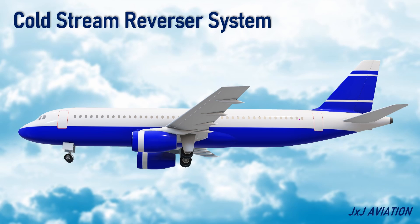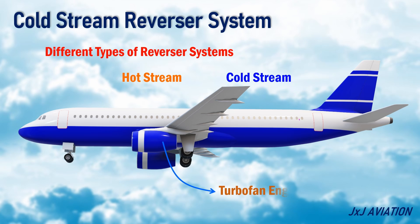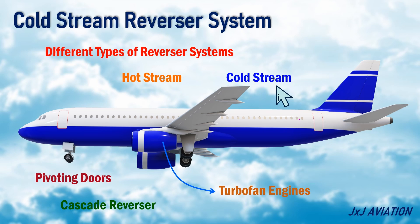There are different types of thrust reverser systems, and they can be classified as the hot stream and the cold stream thrust reversers. In most modern commercial aircraft with turbofan engines, the cold stream type of thrust reverser is used. There are two types of cold stream thrust reversers: the Pivoting Doors Reverser and the Cascade Reverser.